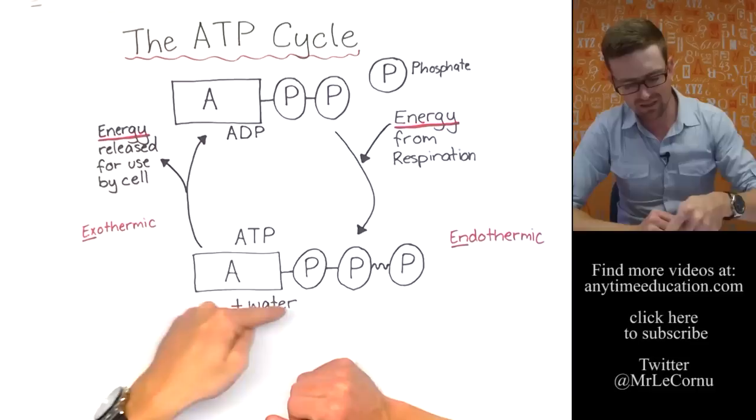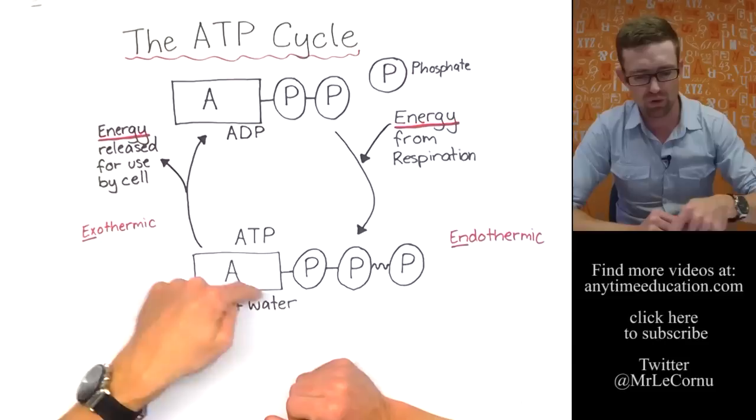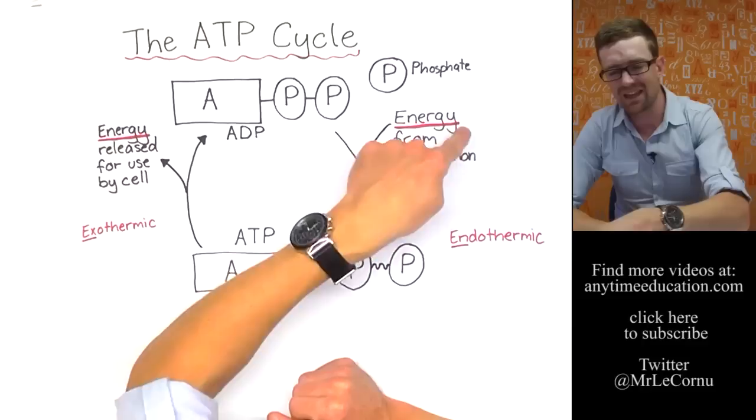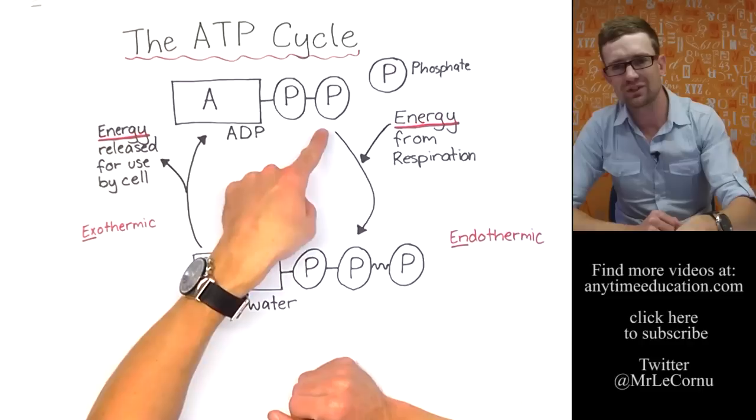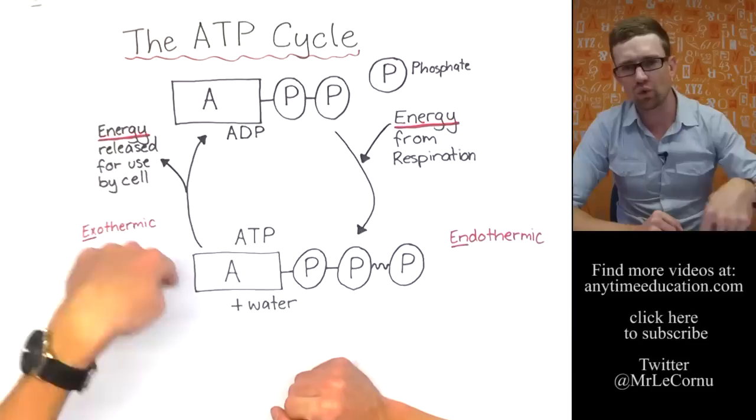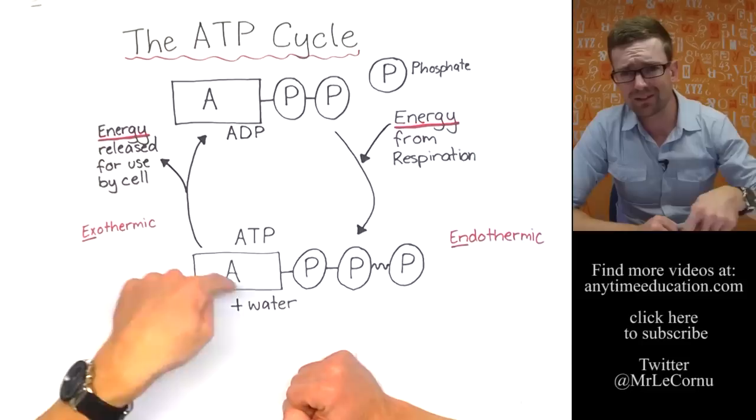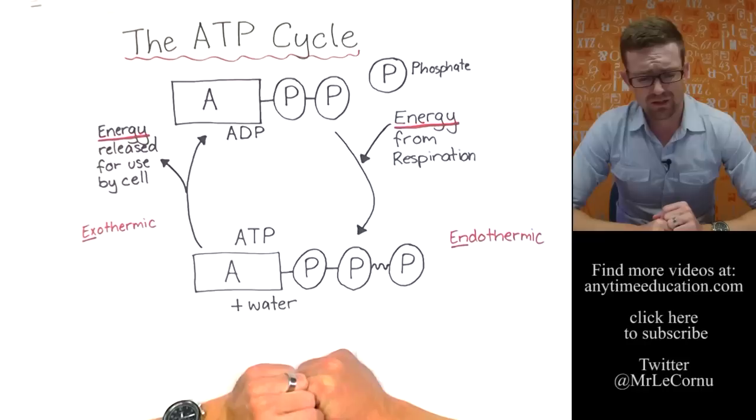So that forms our ATP cycle. The exothermic process of breaking down ATP to ADP and P or converting it. And the endothermic process where energy needs to enter the reaction, which is attaching the phosphate back onto ADP and forming ATP. That cycle occurs continuously. And an amazing thing is the amount of ATP that actually gets recycled in this process.